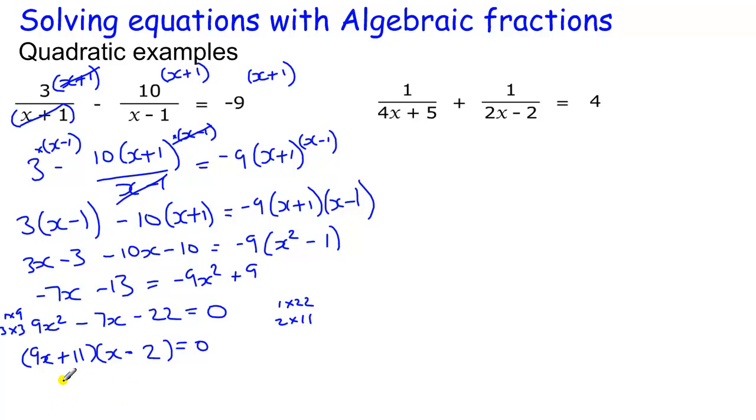So those are my two brackets, and to solve that I must make those both equal to 0, so this one gives me x equals 2. If I have 2 in there, this makes this 0, and 0 times anything is 0. When this is 0, I have x equals, take the 11 over the other side and make minus 11 divided by 9. So minus 11 over 9.